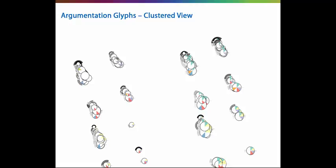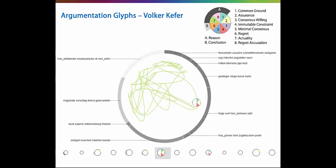When clustered, the argumentation glyphs show groups of similar utterances which typically belong to the same speaker. We can also overlay these glyphs onto the topic space view to analyze different argumentation patterns with respect to the topics over time.